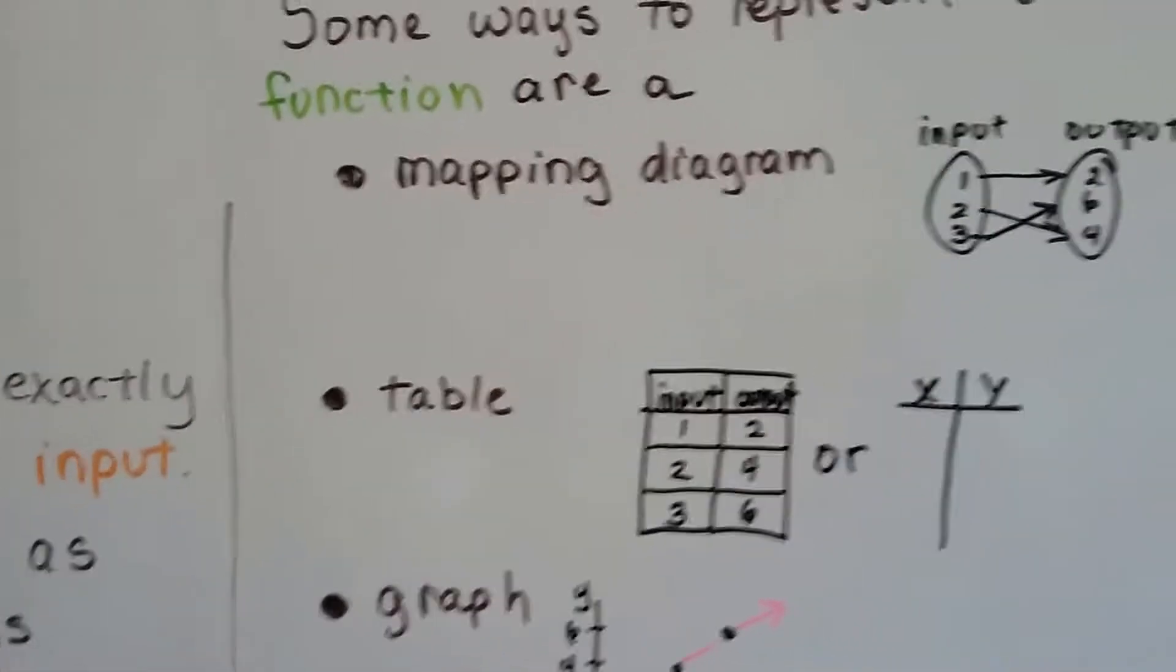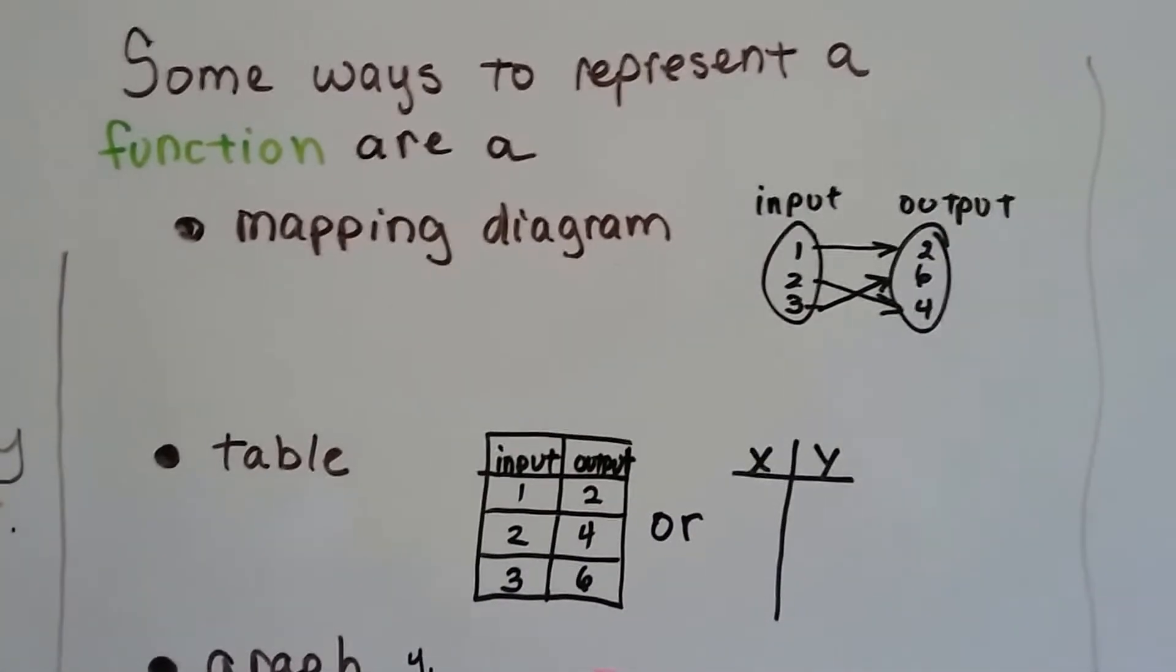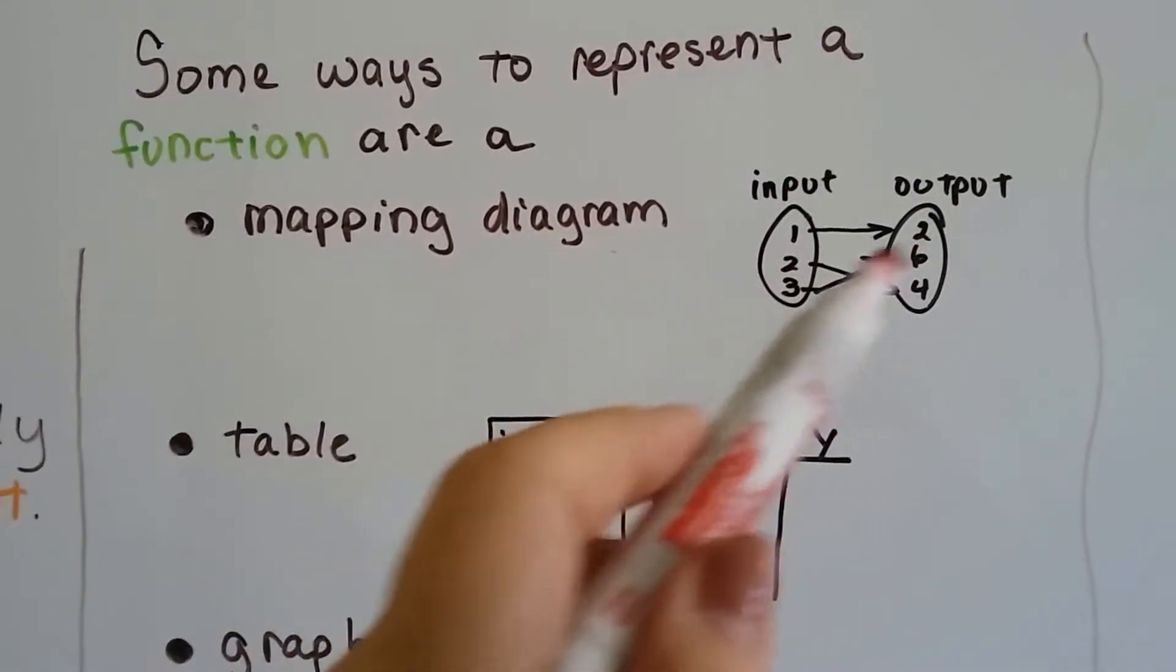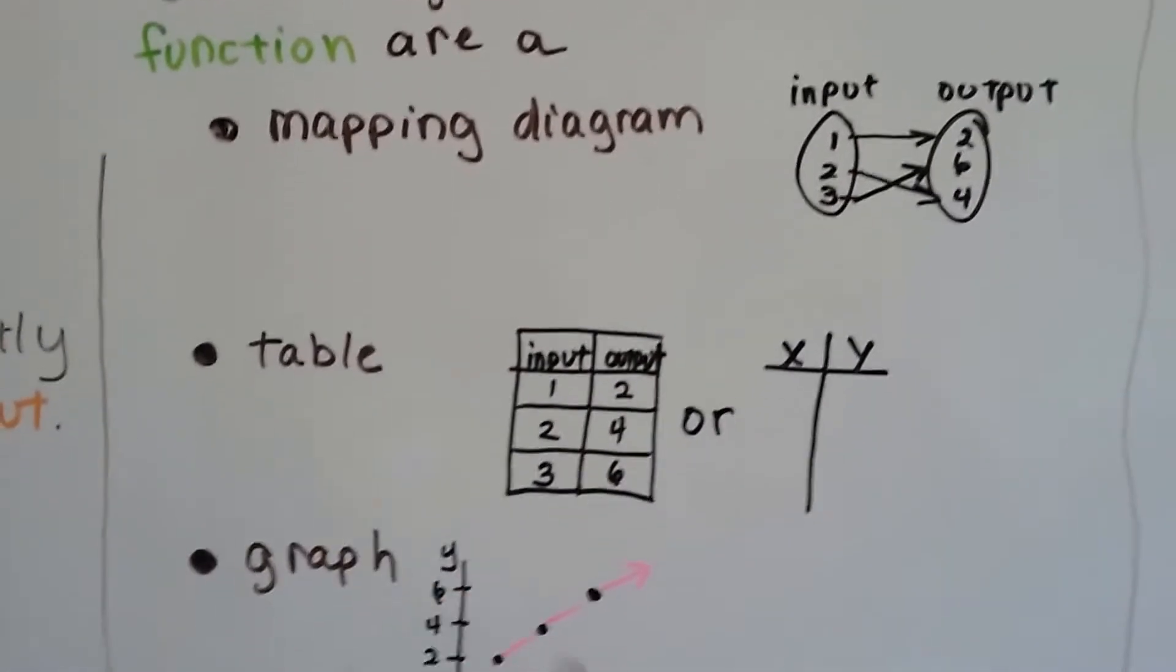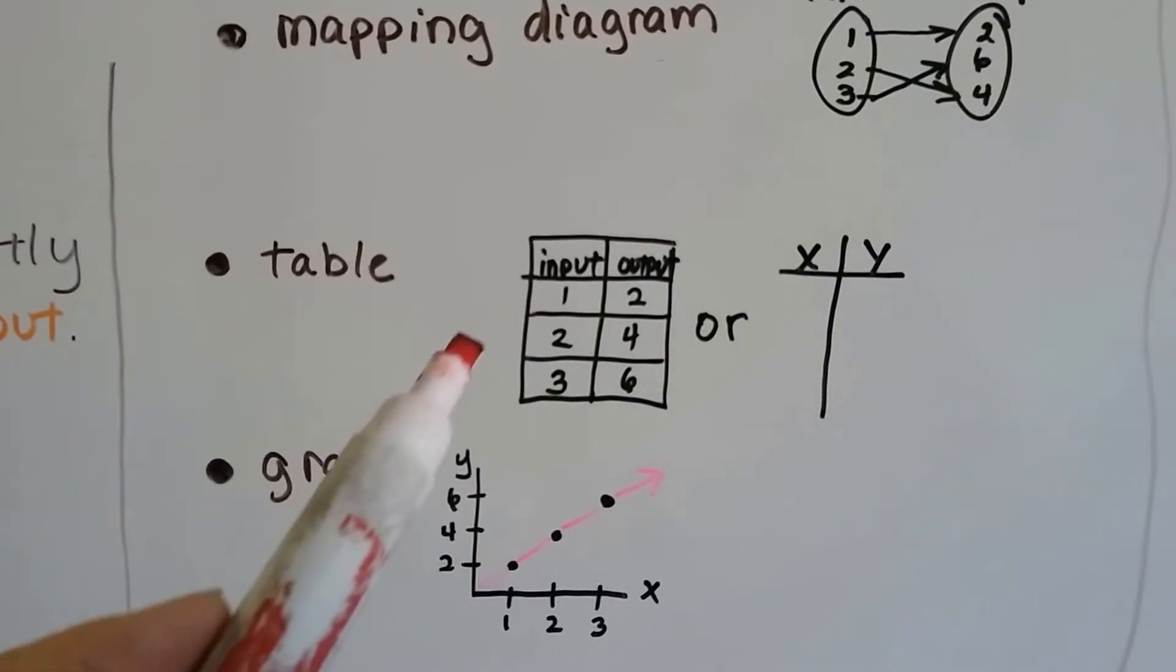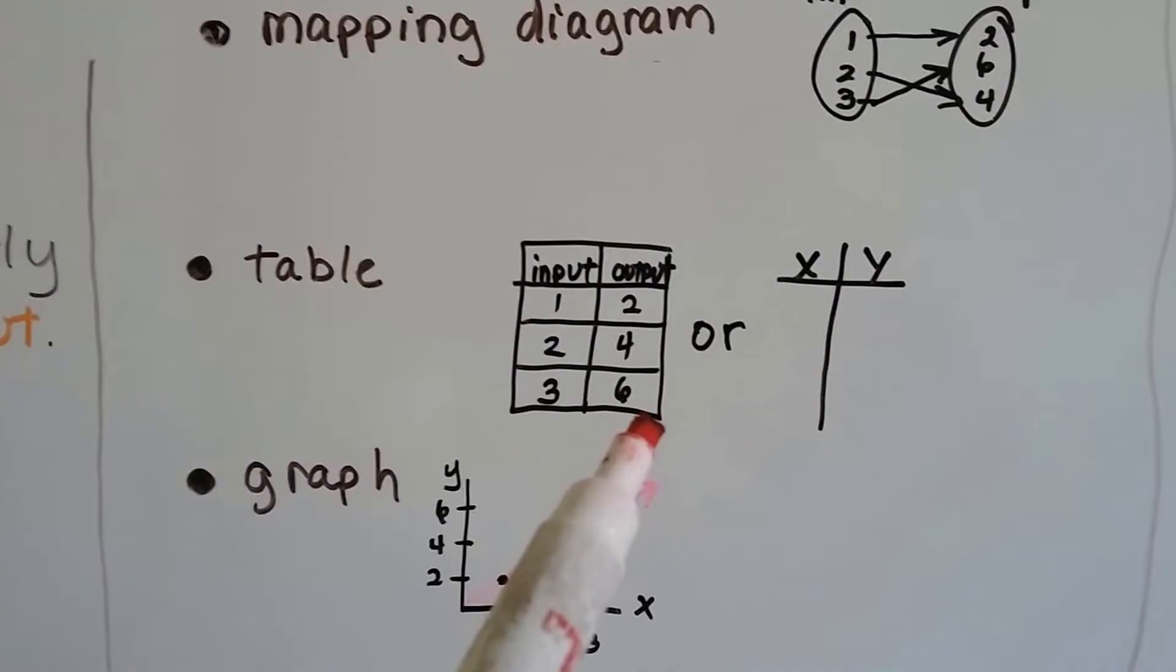There's a lot of different ways to represent a function. There's a mapping diagram and that is input and output as these little ovals and you can match the input to the output. It could be a table and our input is on one side or x and our output is on the other side. That's y.